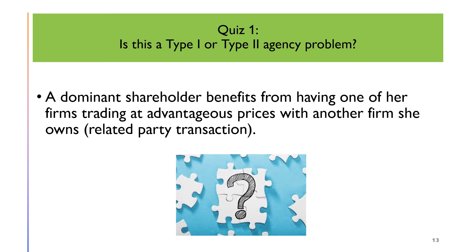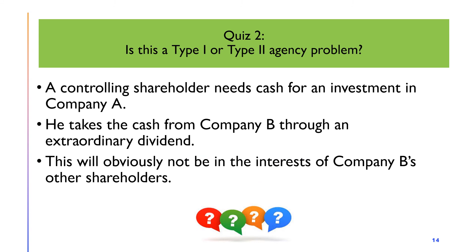Let's have a quick quiz to test your understanding. A dominant shareholder benefits from having one of her firms trading at advantageous prices with another firm she owns — which is a related party transaction. Is this a Type 1 or Type 2 agency problem? The answer is a Type 2 agency problem because the shareholder is a dominant or major shareholder. For another quiz: a controlling shareholder needs cash for an investment in company A and takes the cash from company B through an extraordinary dividend, which will obviously not be in the interest of company B's other shareholders. Is this a Type 1 or Type 2 agency problem? Again, the answer is a Type 2 agency problem.